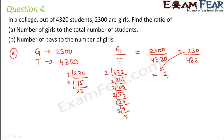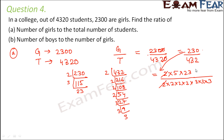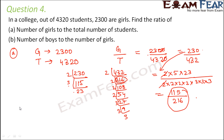So 230 can be written as 2 × 5 × 23, and 432 can be written as 2 × 2 × 2 × 2 × 3 × 3 × 3. Here the common factor 2 cancels from both, leaving 5 × 23 = 115 on top, and 2 × 2 × 2 × 3 × 3 × 3 = 216 on the bottom. So the answer is 115 : 216.